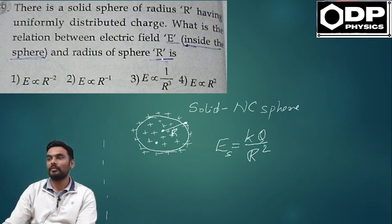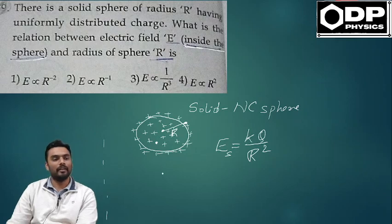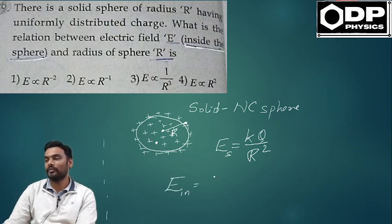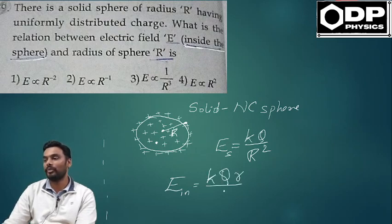What is the electric field inside the sphere? Direct formula. Electric field inside the solid sphere is given by kQ times r by R cubed.